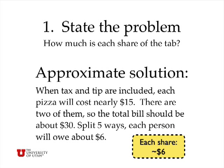After calculating the tax at 6.5% and the tip at 17%, how much does each person owe if you split the tab equally among the five of you? OK, so the problem is, how much is each share of the tab? That's what we want to calculate. And an approximate solution would be, well, when tax and tip are included, each pizza, which is listed at almost $12, would actually turn out to be nearly $15. There are two pizzas, so the total bill should be somewhere in the neighborhood of $30. If we split that five ways, each person will owe about $6. And so we anticipate in the beginning that each share of the cost is going to be about $6.